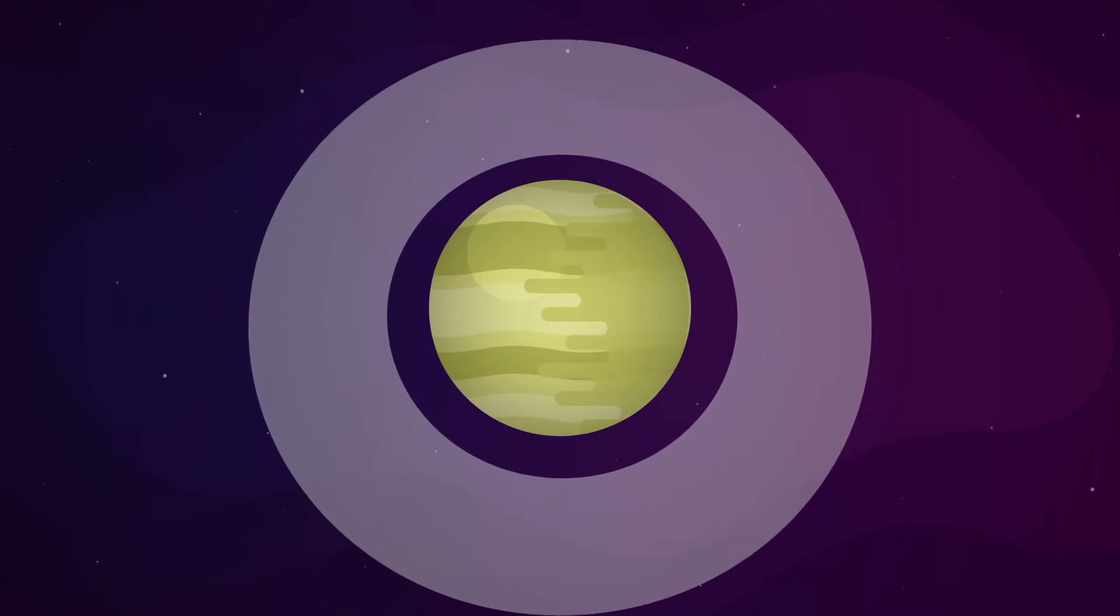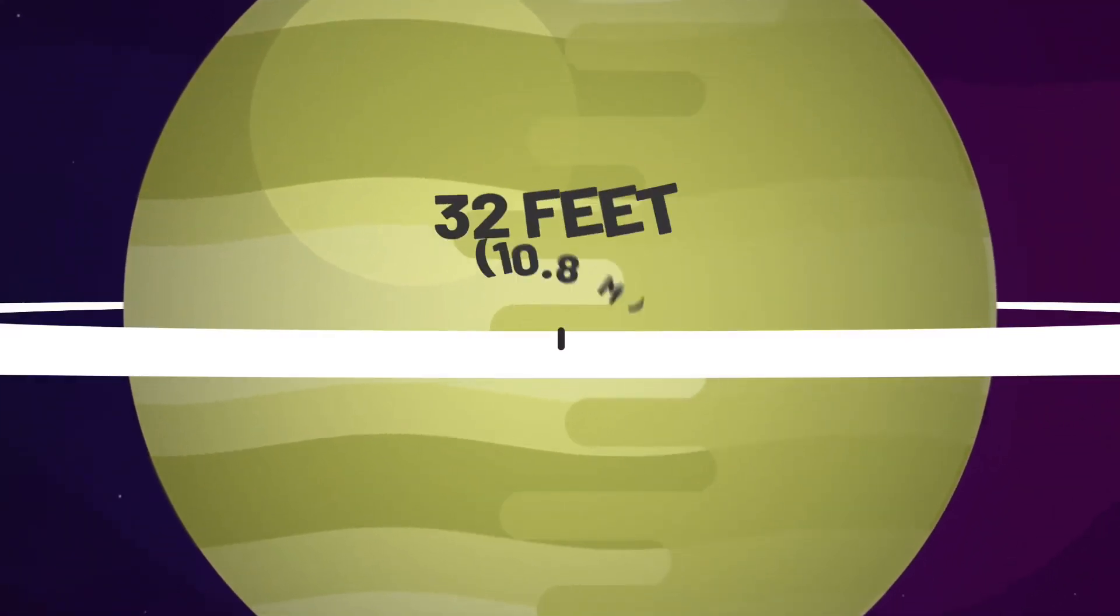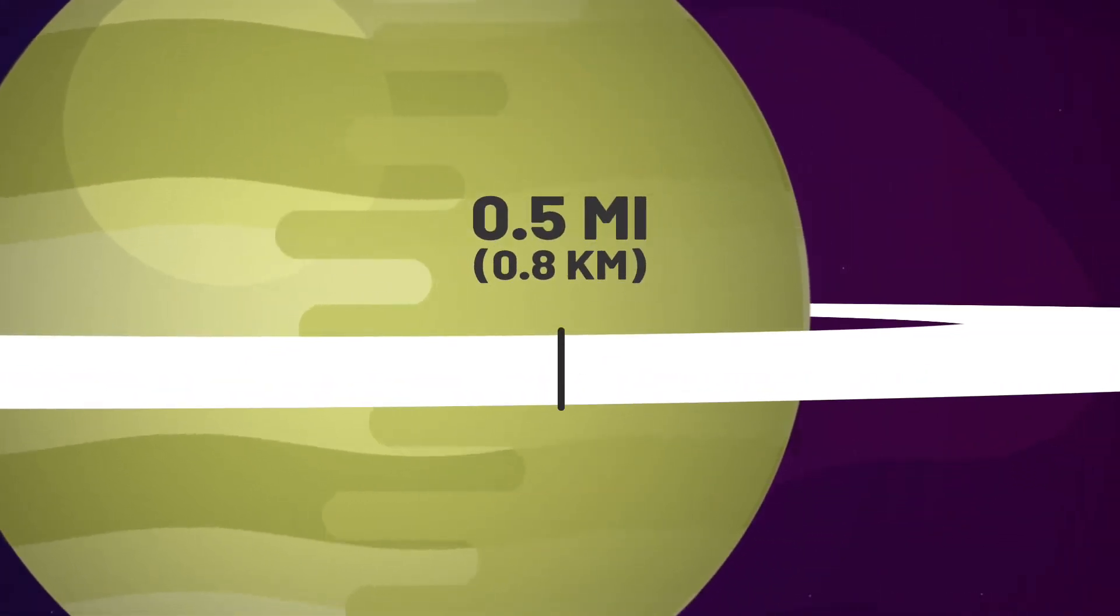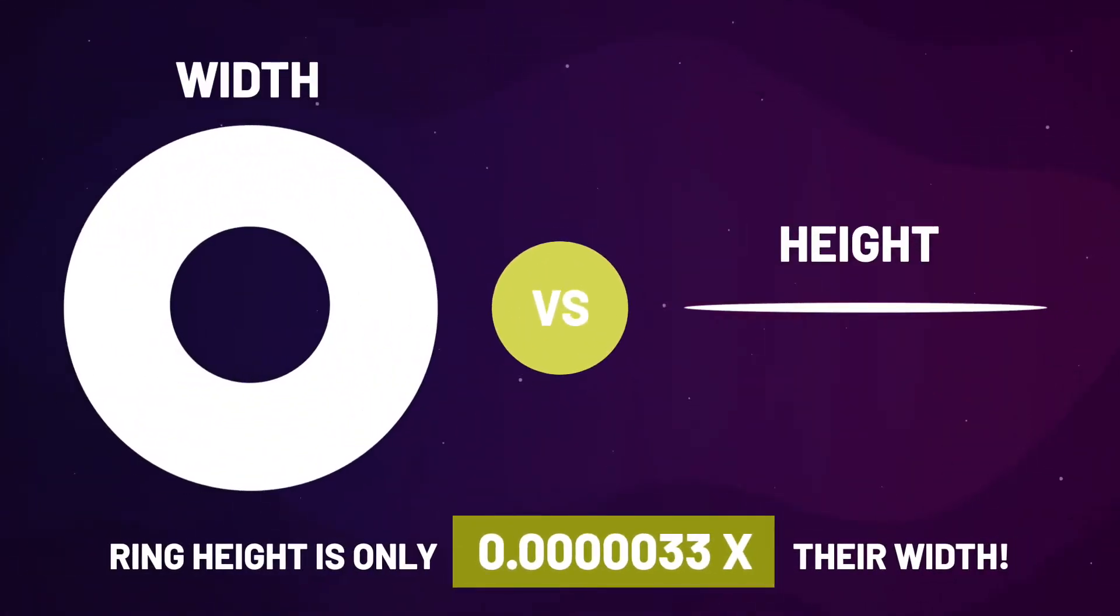So Saturn's rings are extremely wide, but they're also paper-thin, measuring just 30 feet high in some places and up to half a mile high in others. This means that Saturn's rings are just 0.0000003 times as high as they are wide.